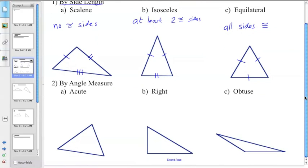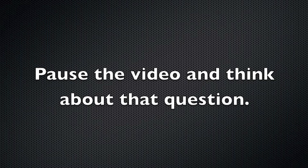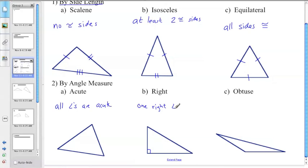Now another way that we can classify triangles is by their angle measure. So an acute triangle is one where all angles are acute. So each of the three angles is less than 90 degrees. A right triangle is a triangle that has one right angle. Can a triangle have more than one right angle? Hopefully you've come to the conclusion that the answer is no, because if you have two right angles, then you already have 180 degrees, and there's no way for you to make a triangle with two right angles.